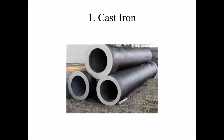Cast iron pipes are manufactured from pig iron by casting, or molding. These pipes can resist corrosion and can withstand high internal pressure, but they are very heavy and difficult to transport. The pipes are brittle in nature and may develop cracks if handled carelessly. They are suitable for conveyance where internal pressure is very high.